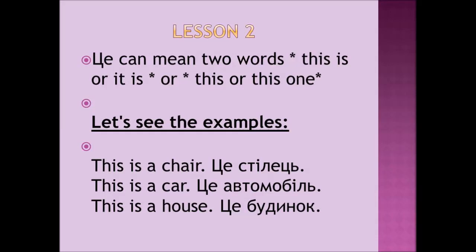Let's see firstly the examples of this is or it is phrase. This is a chair. TSE STILETS. This is a car. TSE AUTOMOBIL. This is a house. TSE BUDINOK.